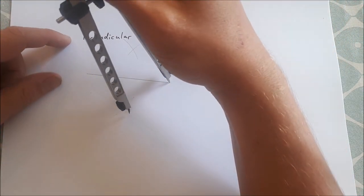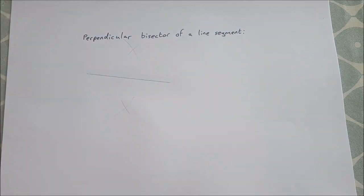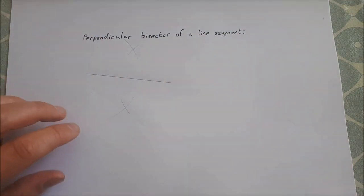And you scribe an arc below that will intersect that second arc. So then we have two points of intersection, one above and one below.